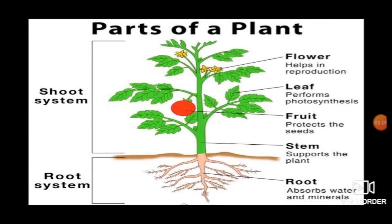The part of the plant which grows below the soil is called the root system. The parts of the plant which grow above the soil are called the shoot system.